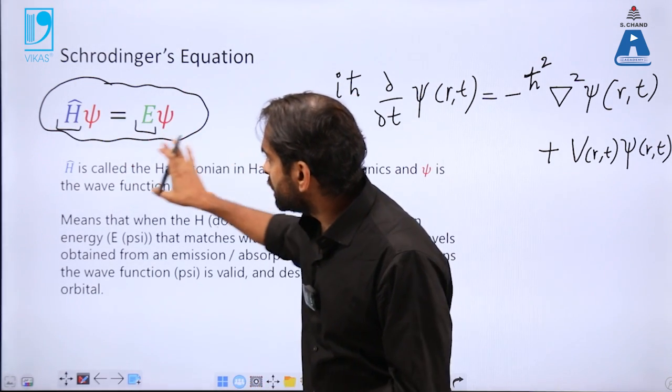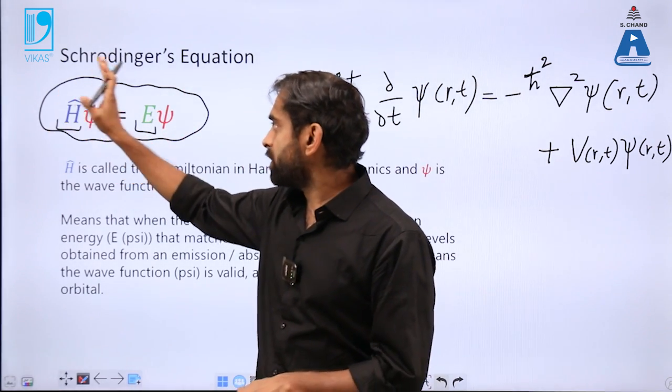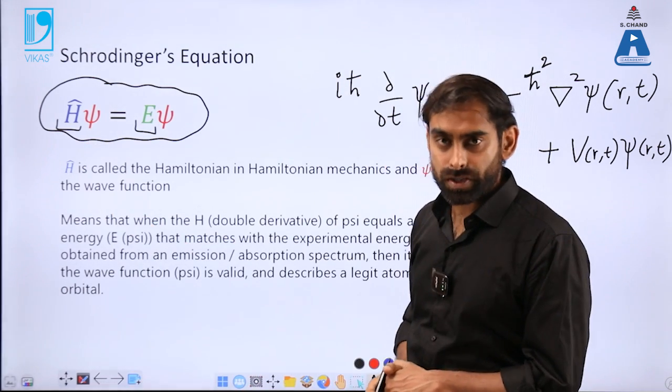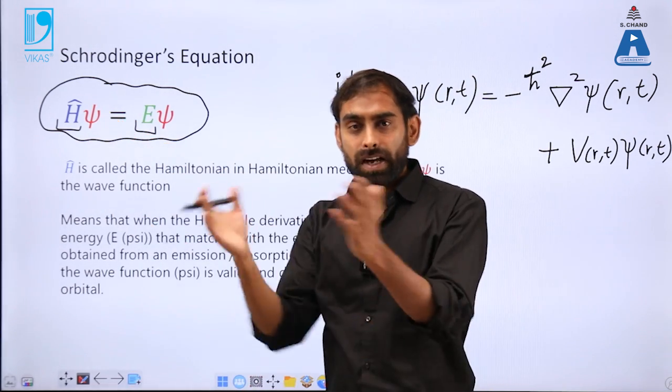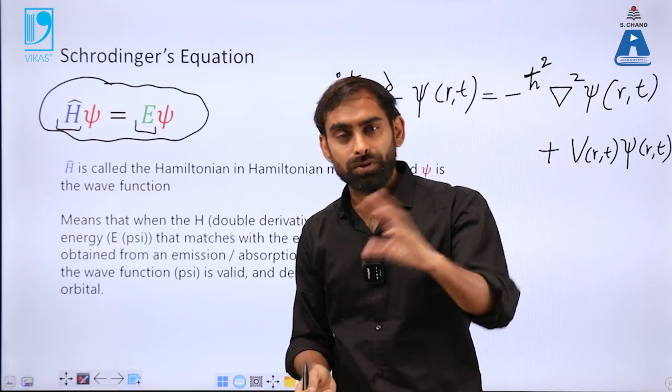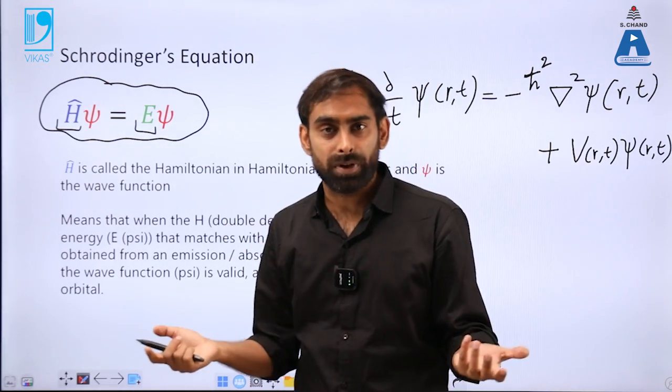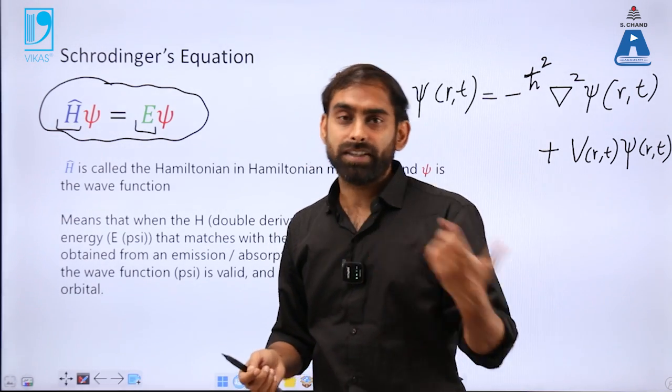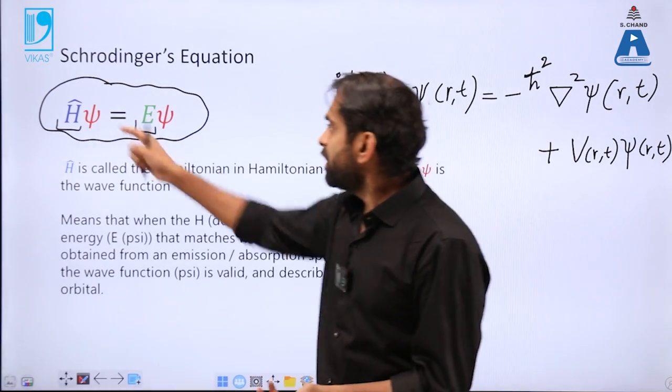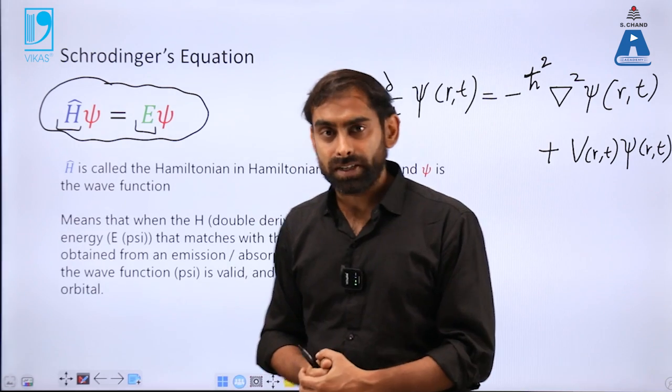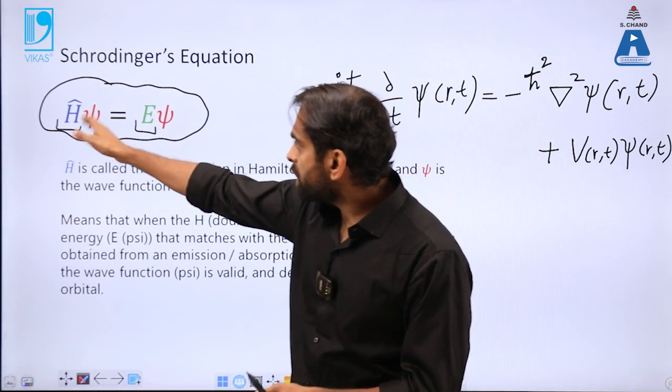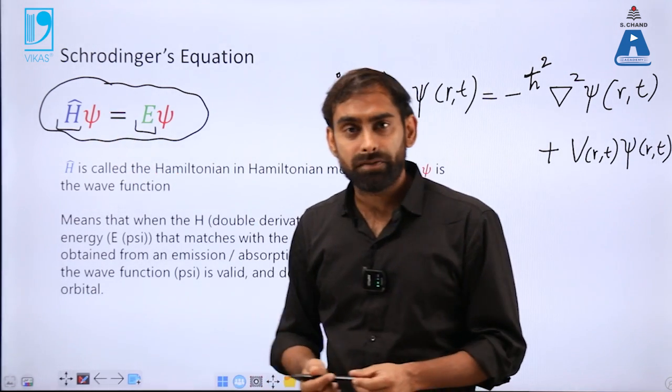H is basically the Hamiltonian operator, and E is the energy function. Hamiltonian operator is something like a mathematical function—just like you do addition, subtraction. So putting a multiplication sign is an operator, putting a minus sign is an operator. Just like that, H is a mathematical operator called Hamiltonian operator.